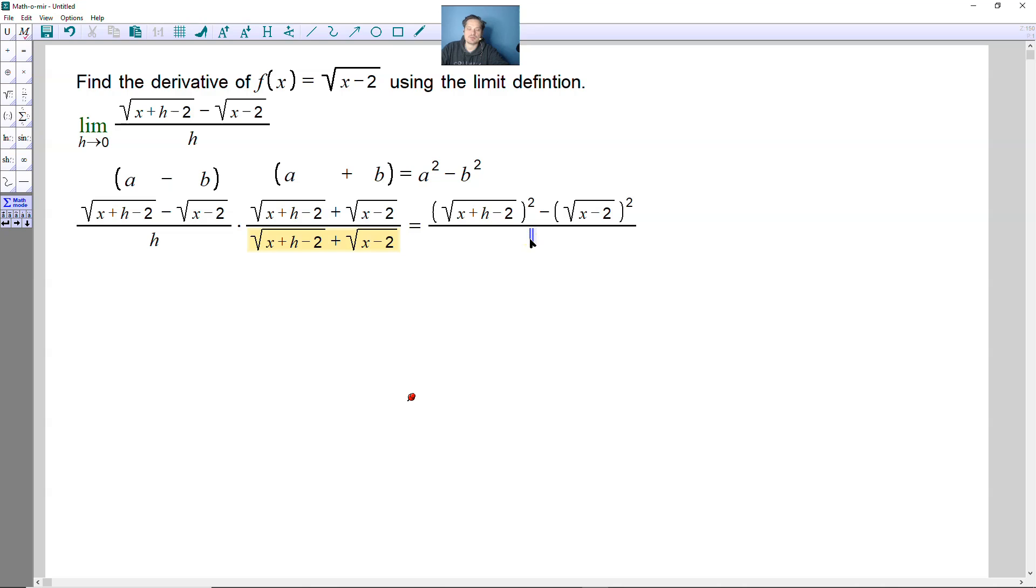On the bottom, you just have the product of the yellow part there, and then h from over here. So you take the bottom there and close it within parentheses, and then multiply by h.